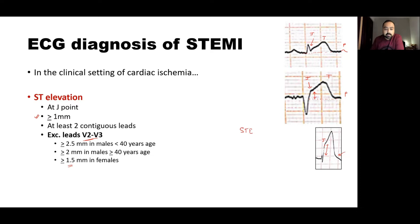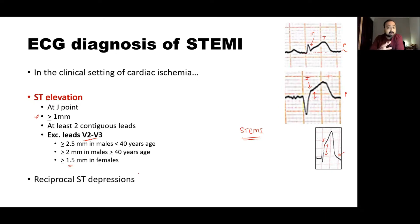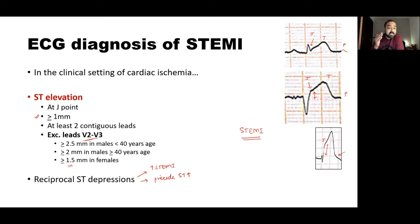Another finding in ECG for diagnosis of STEMI is reciprocal ST depressions. Whenever you have a doubt whether an ST elevation is due to STEMI or some other cause, reciprocal depressions are very suggestive of STEMI. Sometimes reciprocal ST depressions actually precede the development of ST elevations — you may not find significant ST elevations yet because the clinical course is evolving, but prominent reciprocal depressions can help you suspect myocardial infarction.